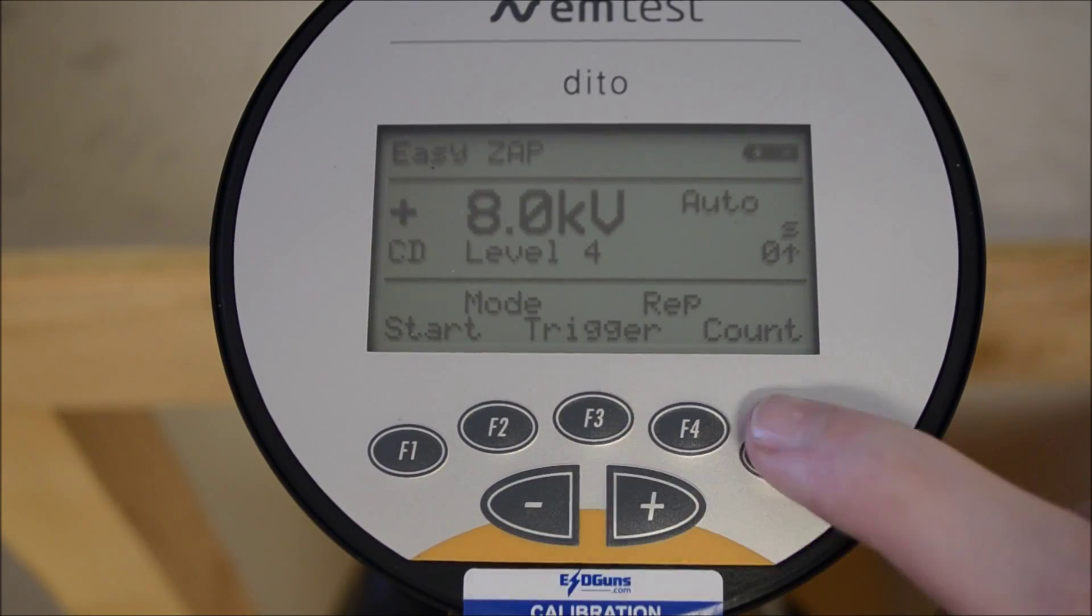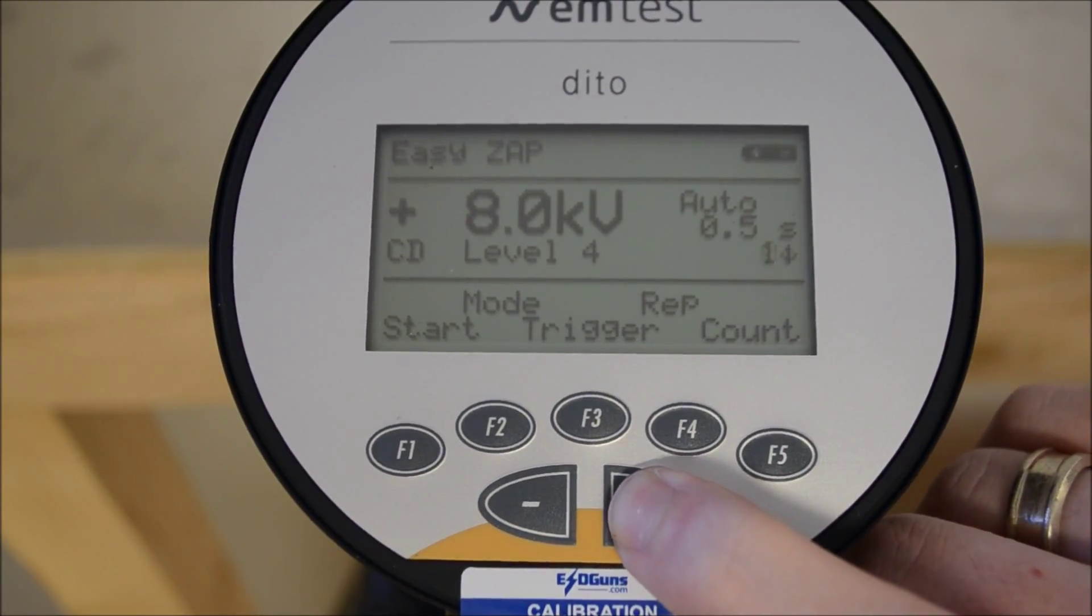F4 allows us to set discharge intervals. Half a second is our fastest in EZZAP mode. Faster speeds are available in evaluation mode.